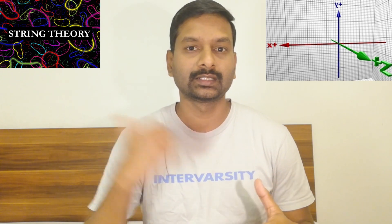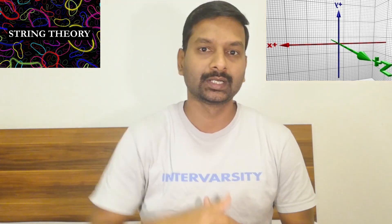The string theory doesn't work in a normal universe of three dimensions. We have three space dimensions: left-right (x-axis), front-and-back (y-axis), and up-and-down — that is three dimensions. Add time and we get four dimensions — space-time.